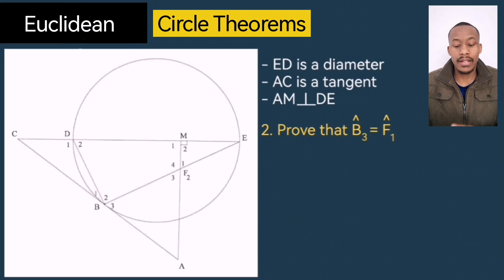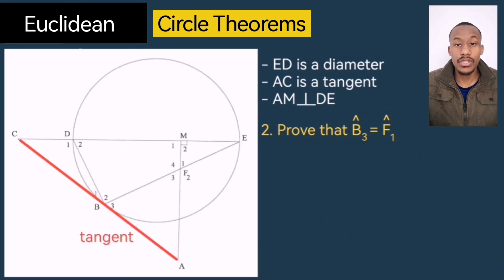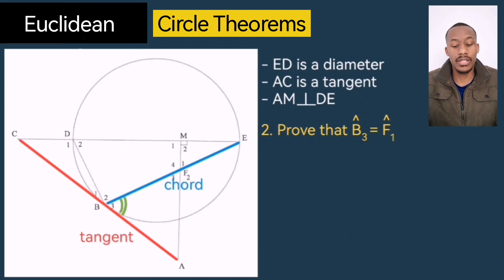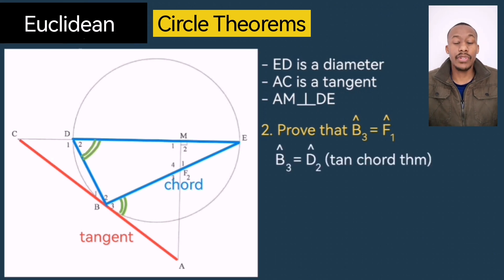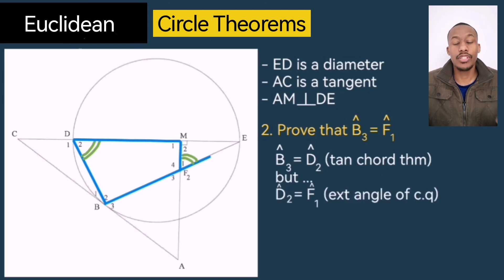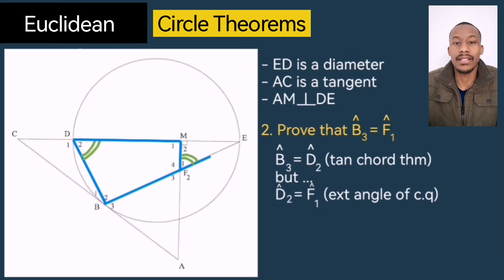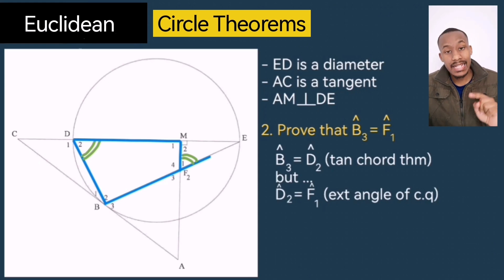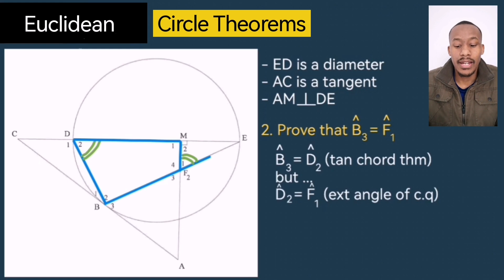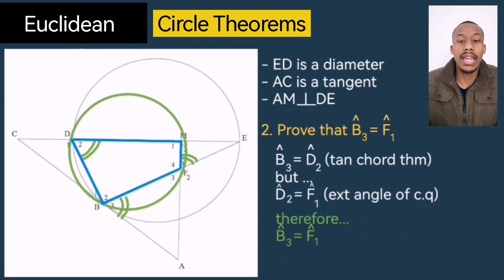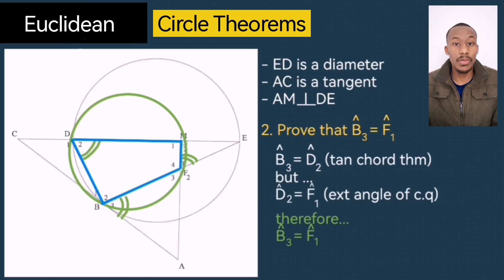Moving on to the second question: prove angle B3 equals angle F1. Angle B3 is the angle between a tangent and a chord, and subtended from that chord is angle D2, so B3 equals D2 by the tangent chord theorem. But D2 is also equal to F1, because FBDM is now a cyclic quad and the exterior angle of a cyclic quad equals the opposite interior angle. So D2 equals F1, and therefore B3 equals F1. You can even draw a circle around FBDM to emphasize it's now a cyclic quad — even though it wasn't given, we proved it to be, so we can use its theorems.